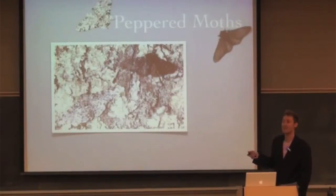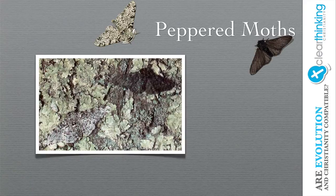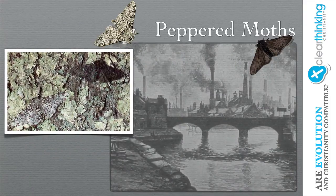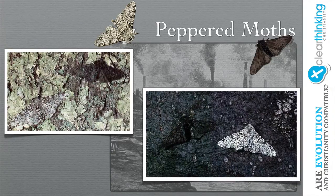The birds couldn't see the moth either, so when they would go hunting for food, they would take out the black moths. Then the Industrial Revolution came along in England, and the pollution covered the trees with black soot and killed the lichen. So what you were left with was the black moth being camouflaged and the white moth being exposed.